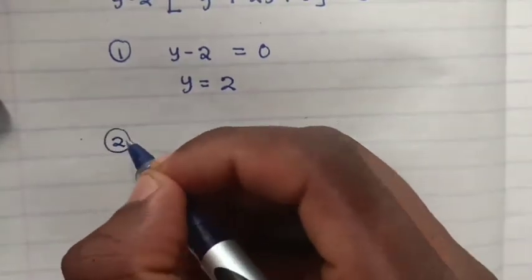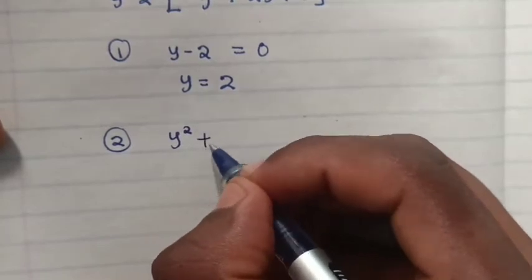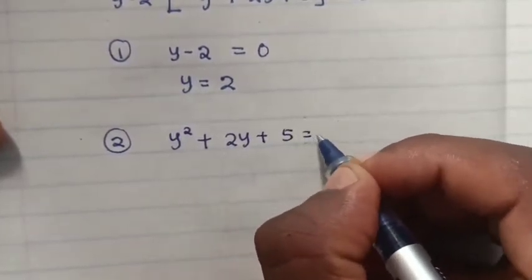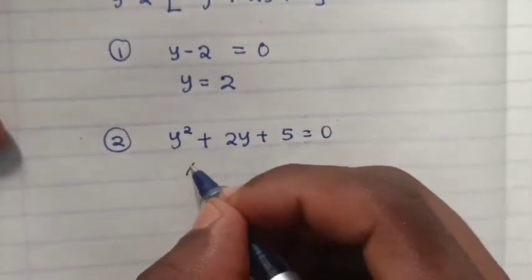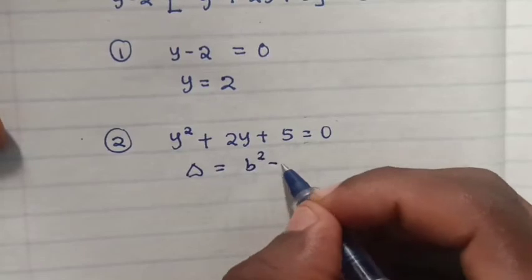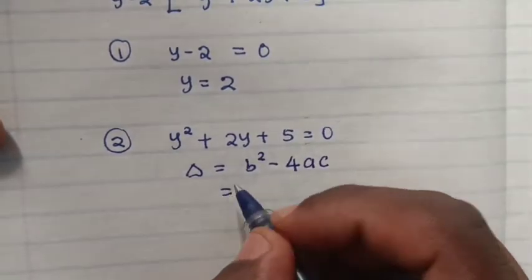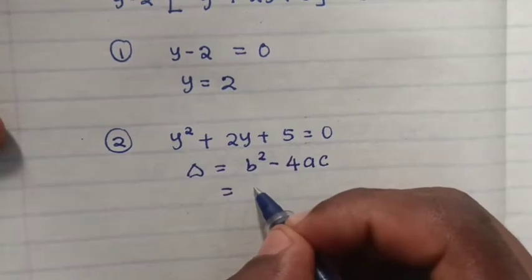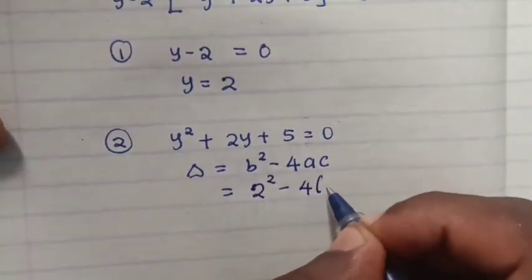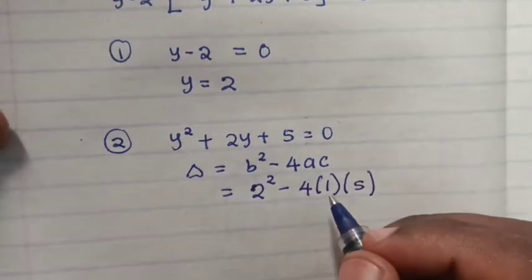And the second solution from the bracket which is y^2 plus 2y plus 5 equals 0. So then we use the discriminant formula, b^2 minus 4ac. B is 2, so it will be 2^2 minus 4. A is 1, so 4 times 1 times 5.